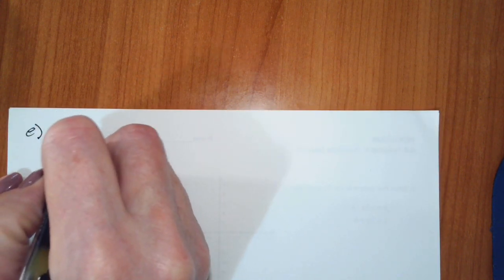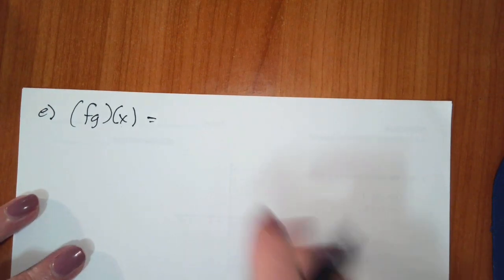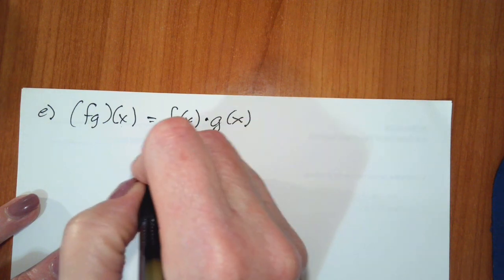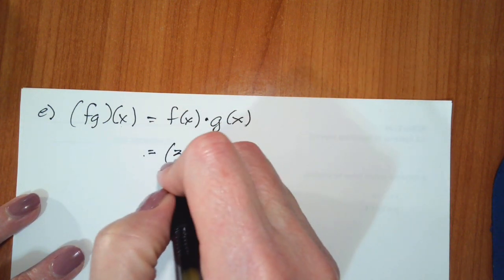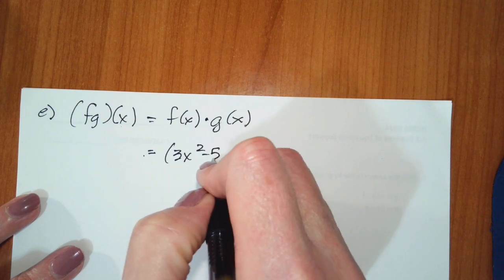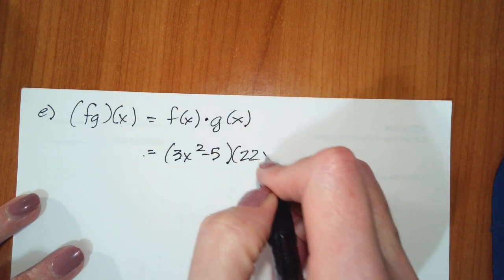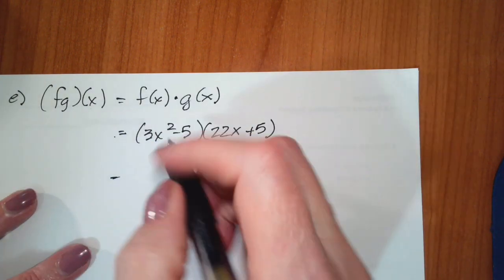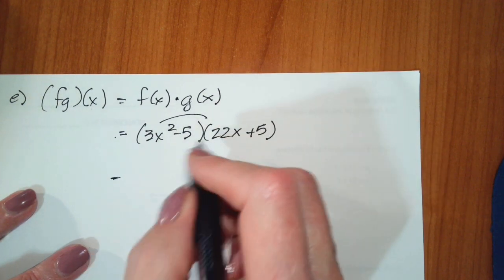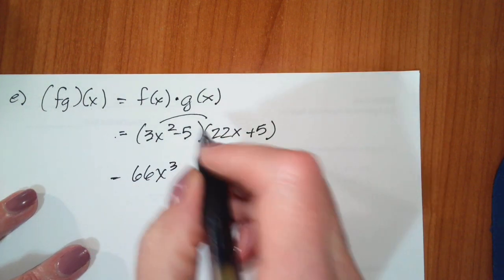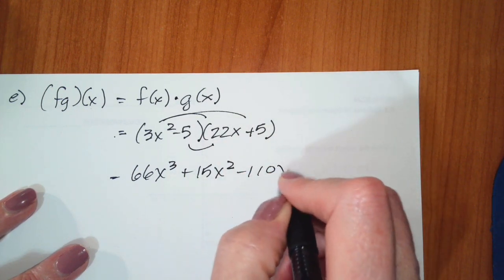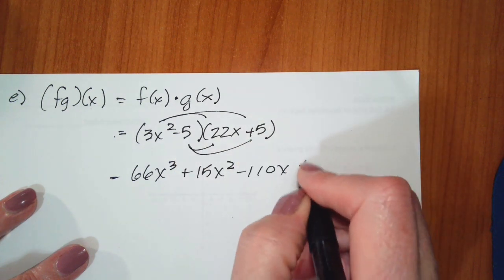Part e asks for fg of x. This is the same thing as f of x times g of x. So f of x is 3x squared minus 5, and g of x is 22x plus 5. Doing the double distribution, I multiply to get 66x to the third plus 15x squared minus 110x minus 25.